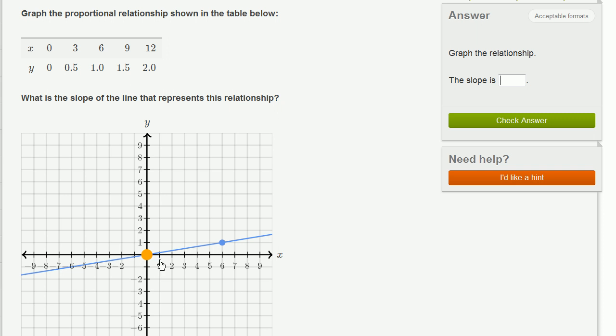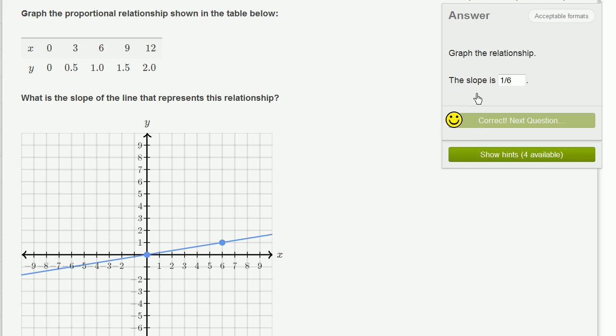Here, our x changed by 6—it went from 0 to 6—and our y changed by 1. So our change in y over our change in x, which is the definition of slope, is: change in y is 1 when change in x is 6. See that right over here. Change in y is 1 when change in x is 6. Let's check our answer. We got it right.